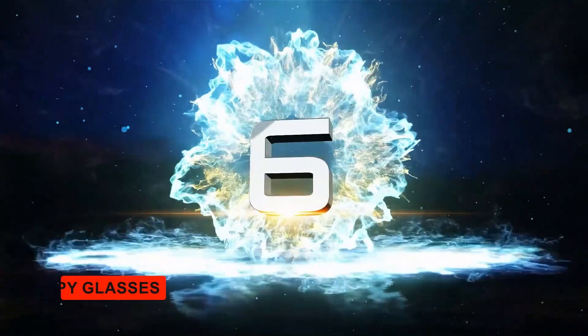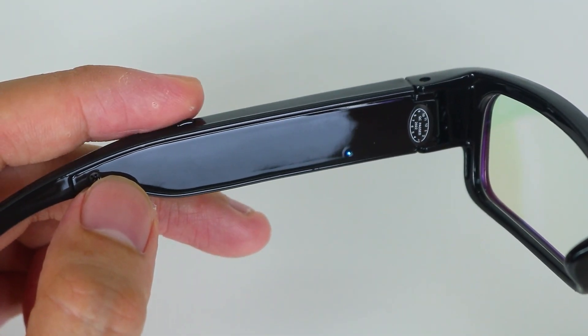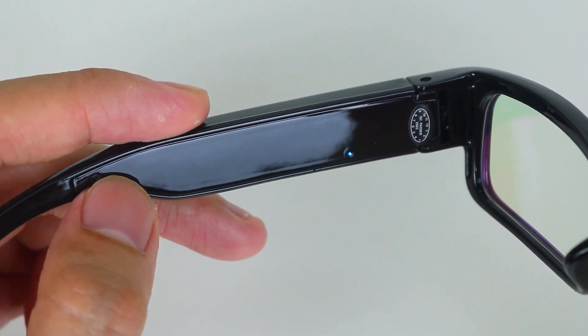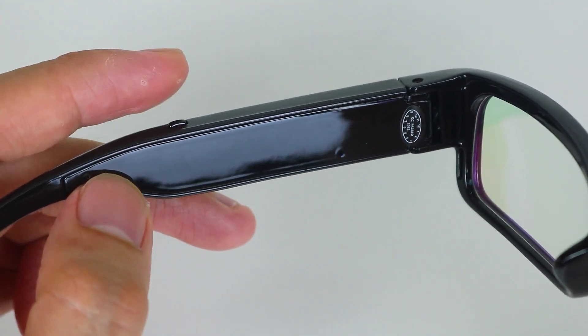Spy Glasses. These normal-looking glasses are fitted with a 1080p camera that records video onto an SD card. They are perfect for covert recording while maintaining a normal appearance in public or professional settings.